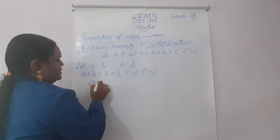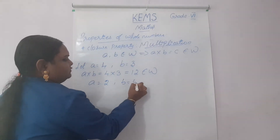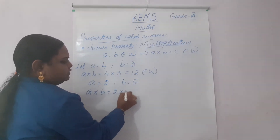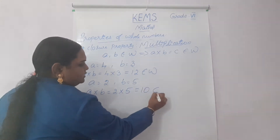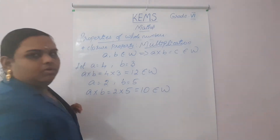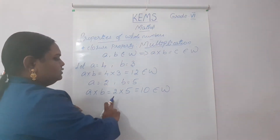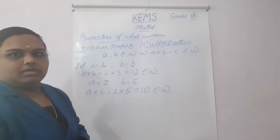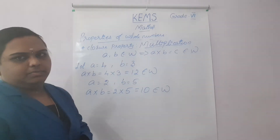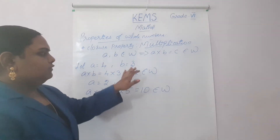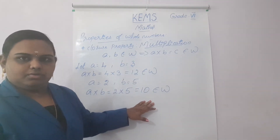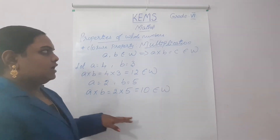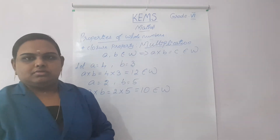Taking A equal to 2 and B equal to 5: A into B equals 2 into 5, which is 10. That is also a whole number. So 2 into 5 equals 10, which belongs to W. This demonstrates the closure property of multiplication — whole numbers are closed under multiplication.